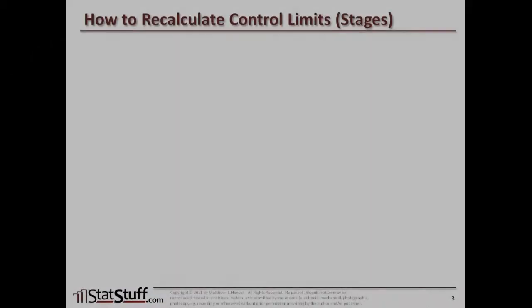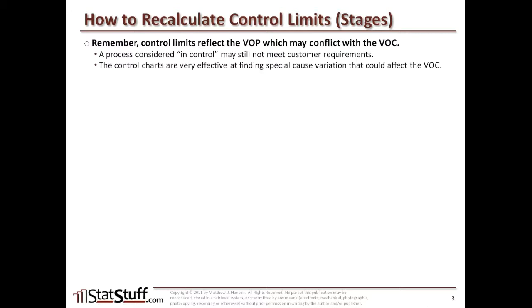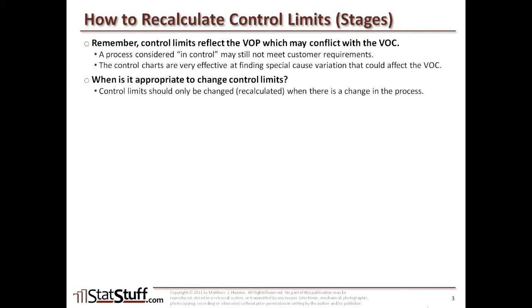Now let's go over how you can recalculate those control limits in the control charts. Control limits typically reflect the voice of the process and how the process is performing, and it could conflict with the voice of the customer — the VOC — what the customer wants and expects. A process could be considered in control, which is good, but still may not meet the customer's requirements, which is bad. Control charts are very effective for helping us find special cause variation that can help us improve the overall process and eventually meet the voice of the customer. Control limits are only going to be changed or recalculated when there's a change in the process itself.